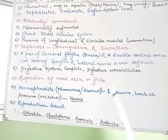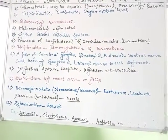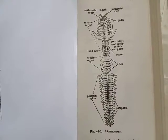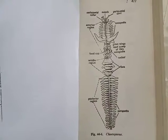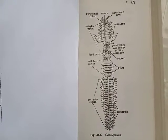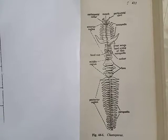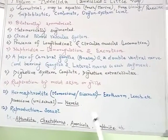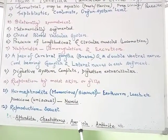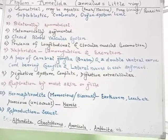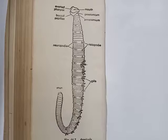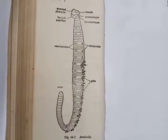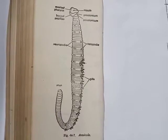More members include Chaetopterus, also called the paddle worm, and Arenicola, also called the lugworm.